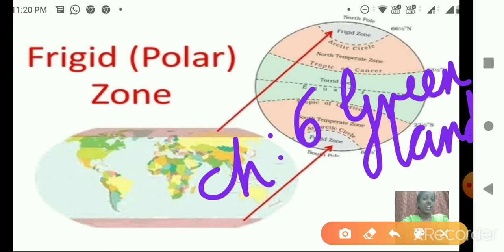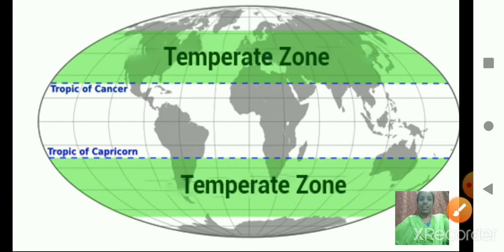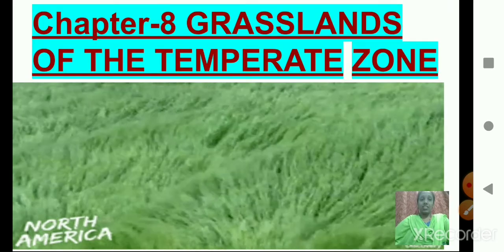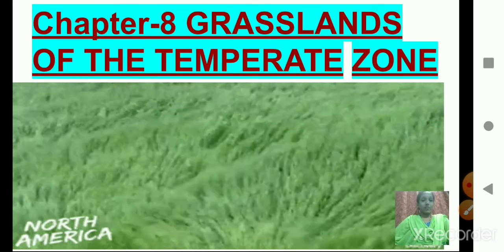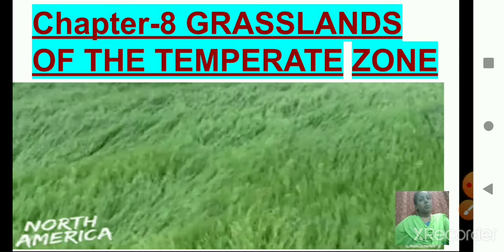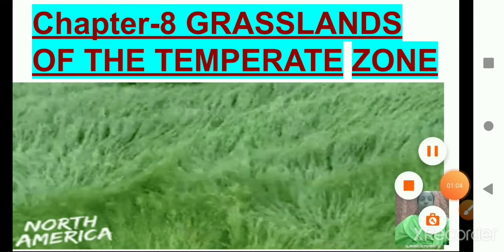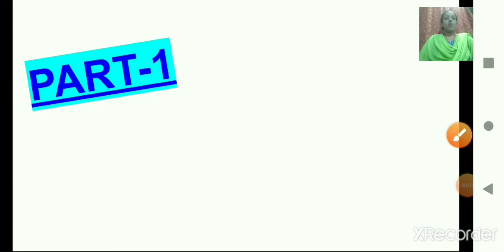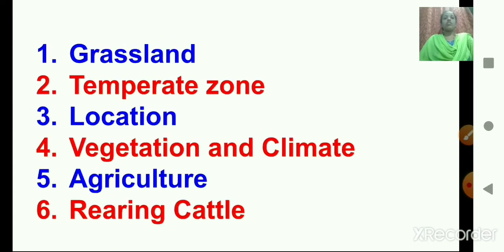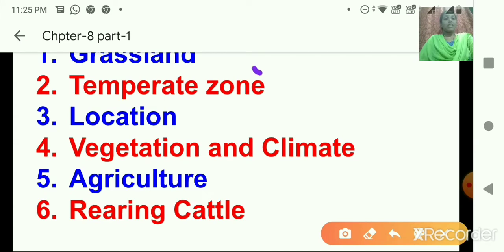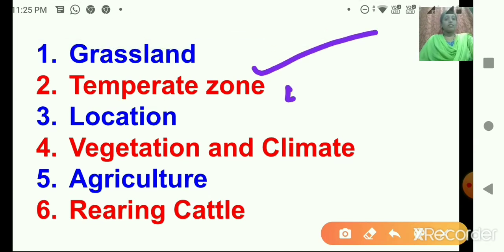We finished with DRC which lies in the torrid zone and Greenland which lies in the frigid zone. So now which zone is left? The temperate zone! Today in Chapter 8 — Grasslands of the Temperate Zone — we are going to study in detail. The name of our chapter is: Grasslands of the Temperate Zone, Part 1.